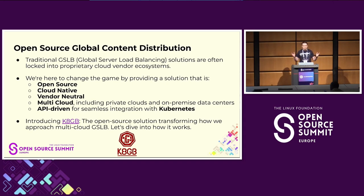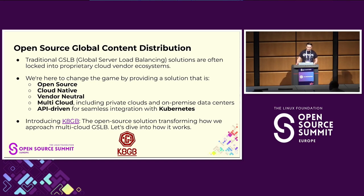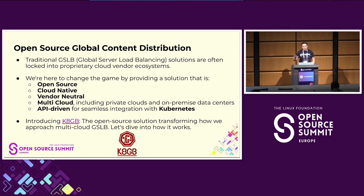The overall topic of this presentation is global content distribution, but not just content distribution — in an open source way. Traditional GSLB, Global Server Load Balancing for global traffic steering, is solved by proprietary vendors, usually proprietary cloud providers like AWS, Azure, and GCP. We basically want to change this picture. The main requirements are that the solution should be open source, cloud native, vendor neutral, ideally part of CNCF, and environment agnostic — multi-cloud, private cloud, any data center — with no environment locking.